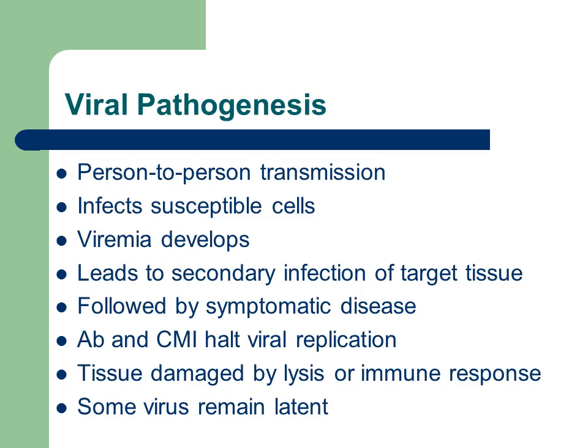Regarding viral pathogenesis, viruses can be transmitted person to person and can only infect susceptible cells. Once they infect a susceptible cell, viremia occurs — virus enters the bloodstream — which can lead to secondary infections. For example, a viral respiratory infection can irritate tissue, allowing a secondary bacterial infection to develop.